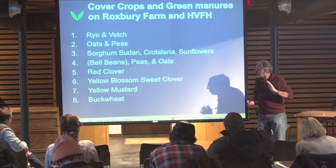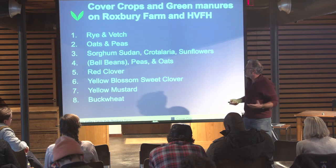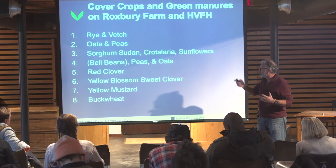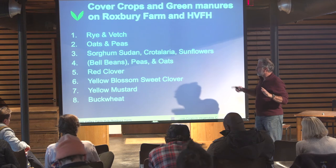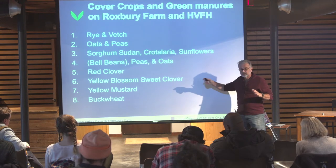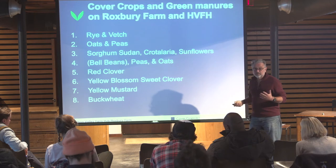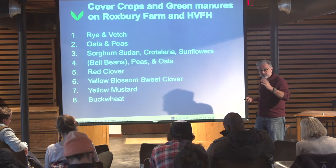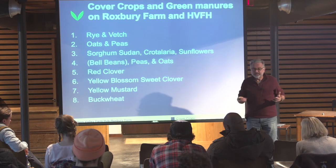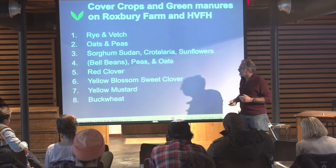These are some of the cover crops we grow at the Farm Hub and Roxbury, listed by how often we use them. Rye — or rye and vetch — is still number one. Oats and peas is number two. Sorghum-sudan, crotillaria, and sunflowers. Bell beans are a little expensive — I love bell beans but mostly use oats and peas. Red clover a little further down, yellow blossom sweet clover, and mustard. We don't use a lot of mustard because we already have a lot of mustard family in our vegetable crops. Buckwheat is okay — it grows for about five weeks then you work it under again.